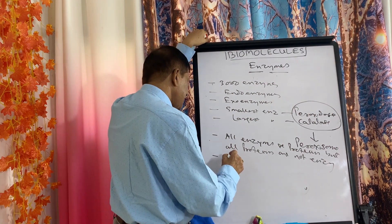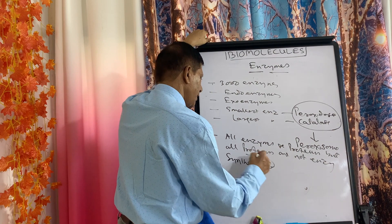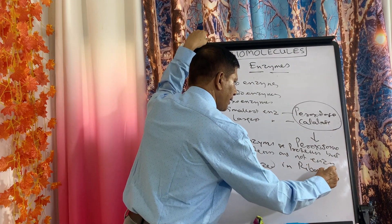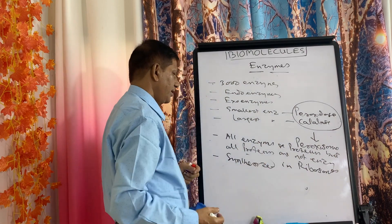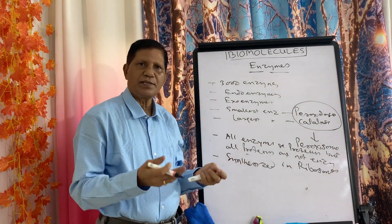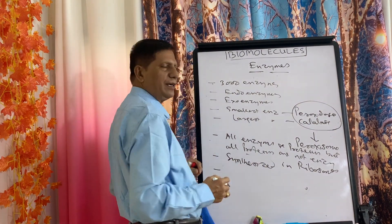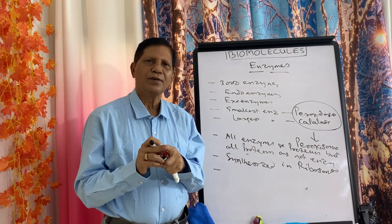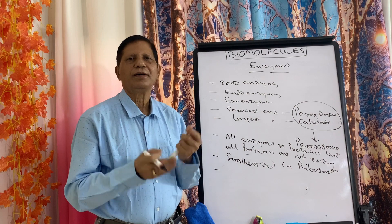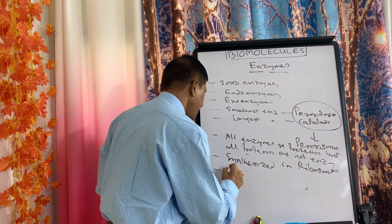Enzymes are synthesized in ribosomes, because enzymes are proteins and proteins are synthesized by ribosomes. If one asks what type of bonds are present in enzymes — since enzymes are proteins, they are joined by peptide bonds.